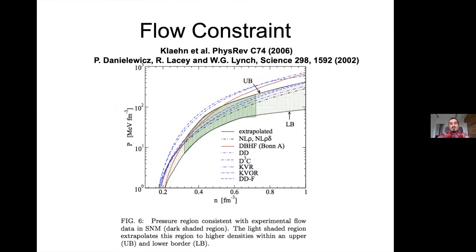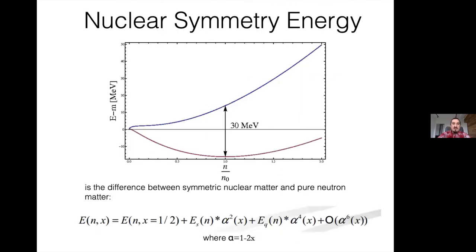There have been attempts to constrain the stiffness of symmetric nuclear matter in the laboratory. For instance, the so-called flow constraint from heavy ion collision experiments gave a region in the pressure versus density plane where matter should lie — basically establishing that matter should not be too stiff or too soft.